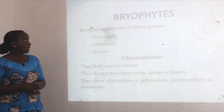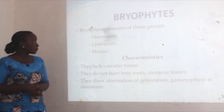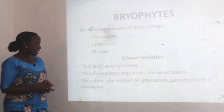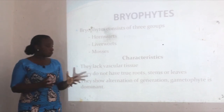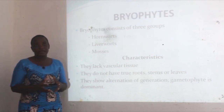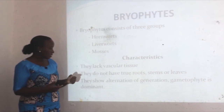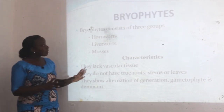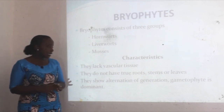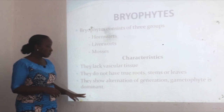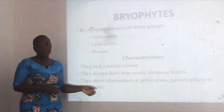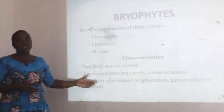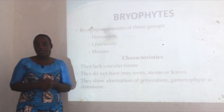Bryophytes consist of three groups: hornworts, liverworts, and mosses. Their characteristics: they lack vascular tissues, unlike other plants. They do not have true roots, stems, or leaves. They show alternation of generations, with the gametophyte generation being the dominant generation in bryophytes.